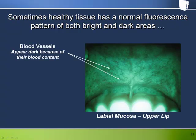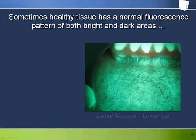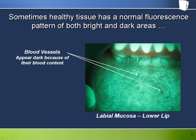This is the labial mucosa on the upper lip, with blood vessels again showing up dark under the scope. The labial mucosa on the lower lip presents similarly to the upper lip.